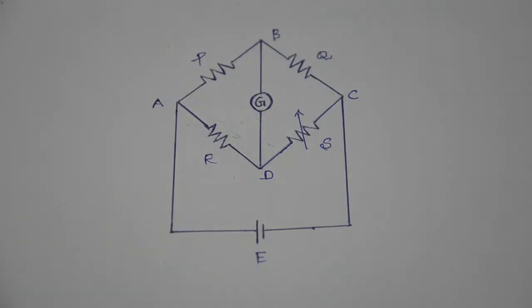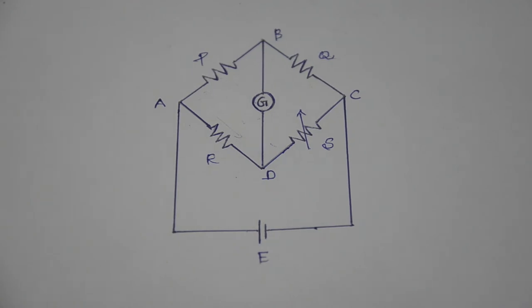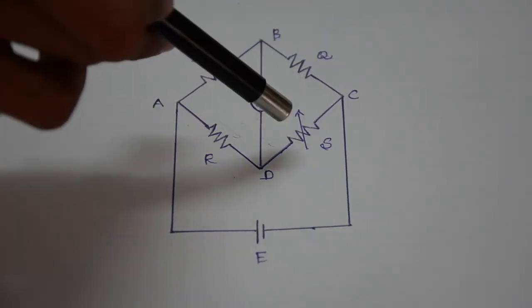Each arm is connected with resistance between them. We have fixed known resistance P and Q, variable resistance S and unknown resistance R. They are connected across the arms A, B and D.